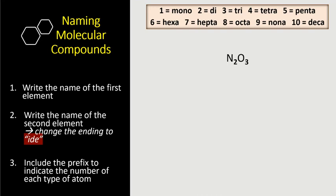Step number one tells us to write down the name of the first element. So N is nitrogen. Let's write down nitrogen. Step number two tells us to write down the name of the second element but change the ending to ide. We have oxygen so let's change that to oxide.